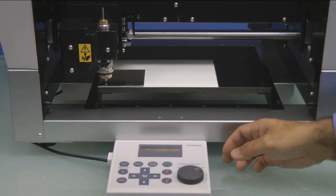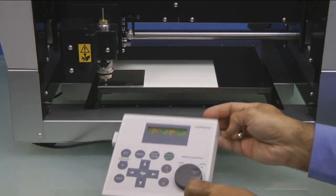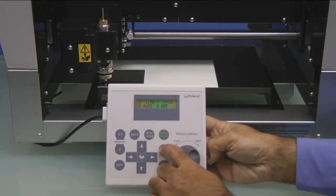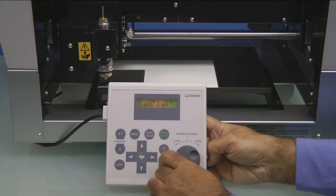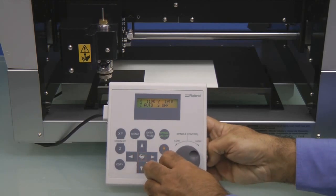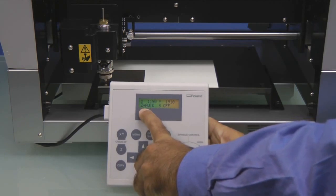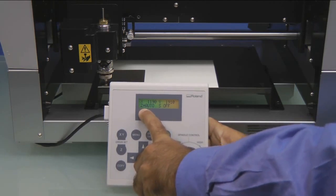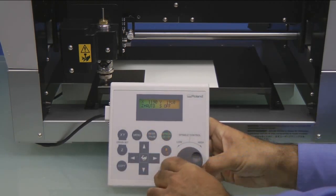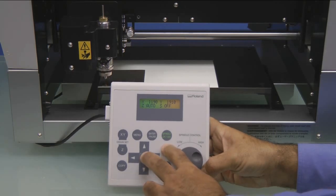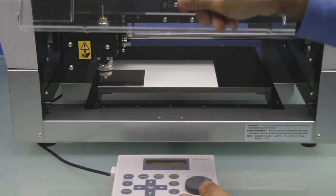To verify the configuration, press the Z plus key to raise the tool. Then press the Z minus key and continue holding it until you see the asterisk next to Z auto. This indicates that the machine found the surface.